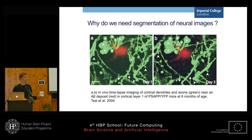Segmentation is an image processing technique that tries to put labels on every pixel in an image to describe what object it belongs to. Here in this project, we try to use segmentation to extract neurons from images in order to study their shape.